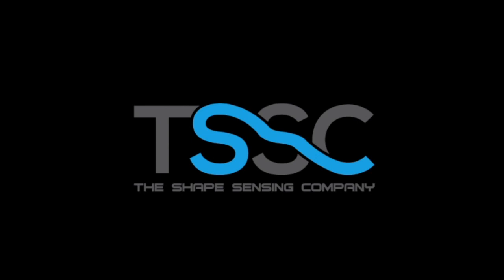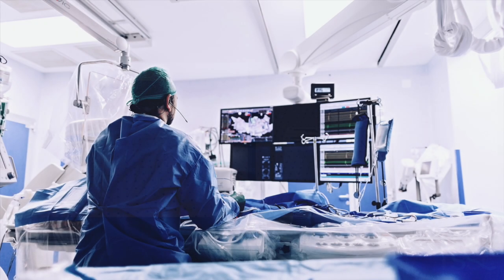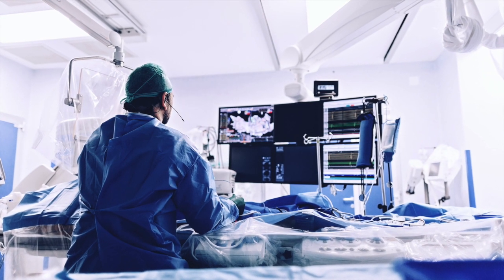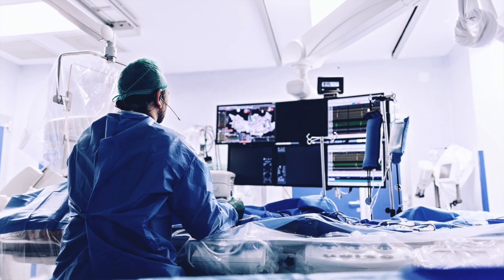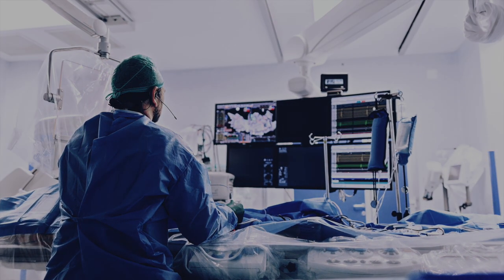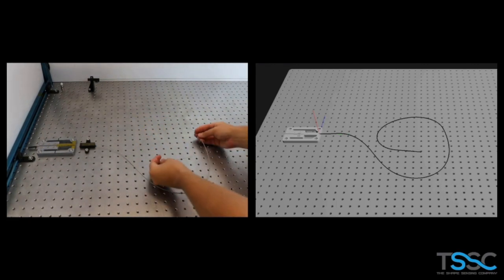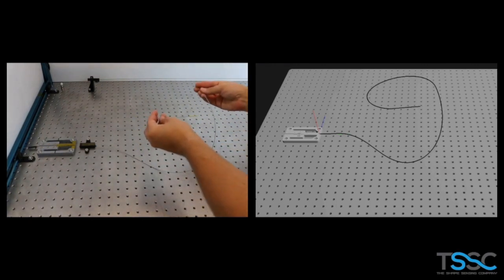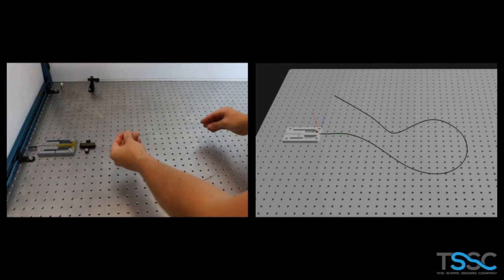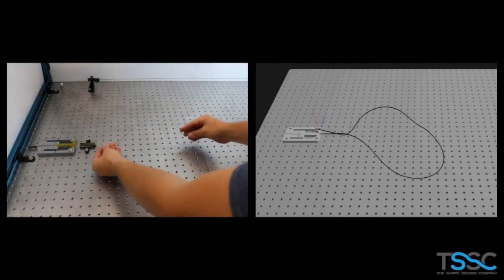The Shape Sensing Company is developing a next-generation 3D guidance system for surgical devices utilizing our patented fiber-optic shape-sensing technology. Sending a beam of light down our proprietary sensors, our system provides the shape and location of the full length of a fishing line-sized wire in real time.